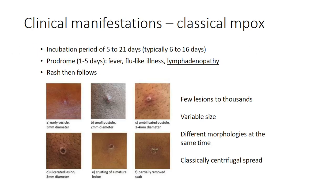In terms of classical monkeypox, or mpox as we're now increasingly calling it, it has an incubation period of up to 21 days, minimum five days. Typically in 2022, we've been seeing about seven to eight days, and it depends on the outbreak and potentially how people are getting infected. Typically, but not always, it starts with a prodrome — a flu-like illness, often with fever.